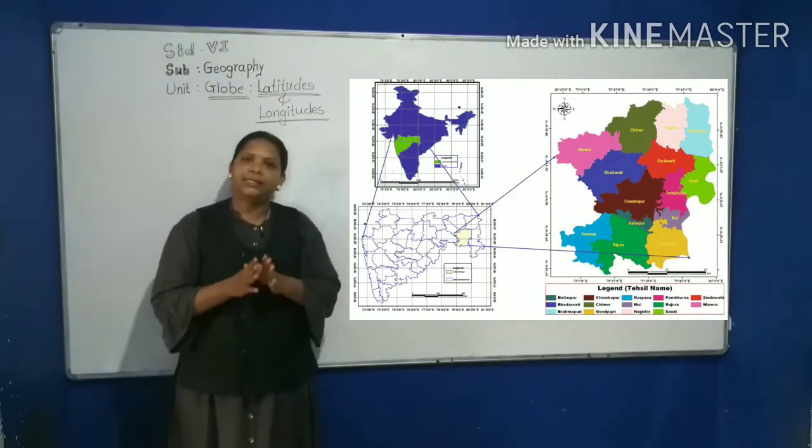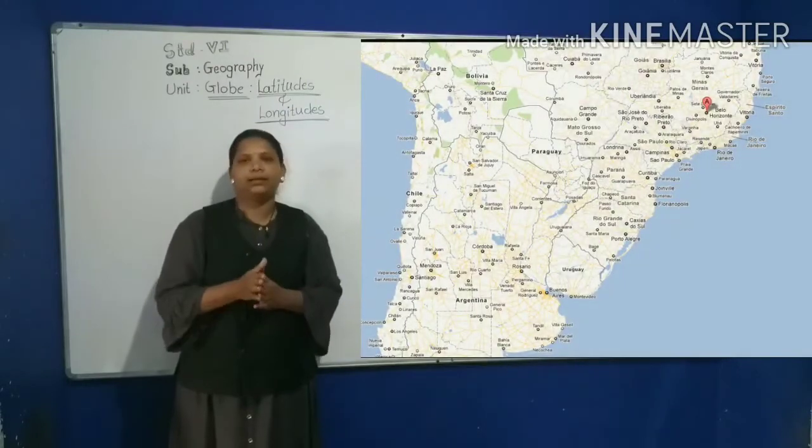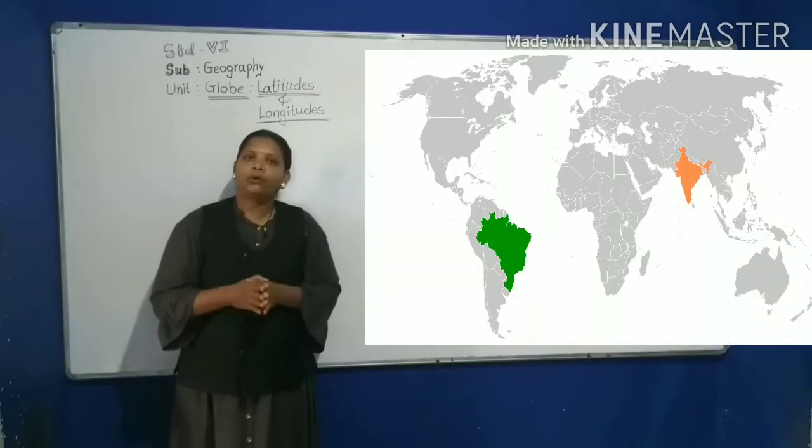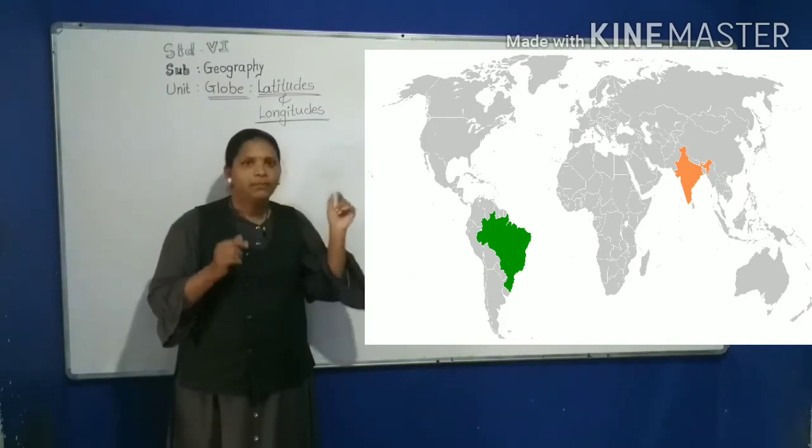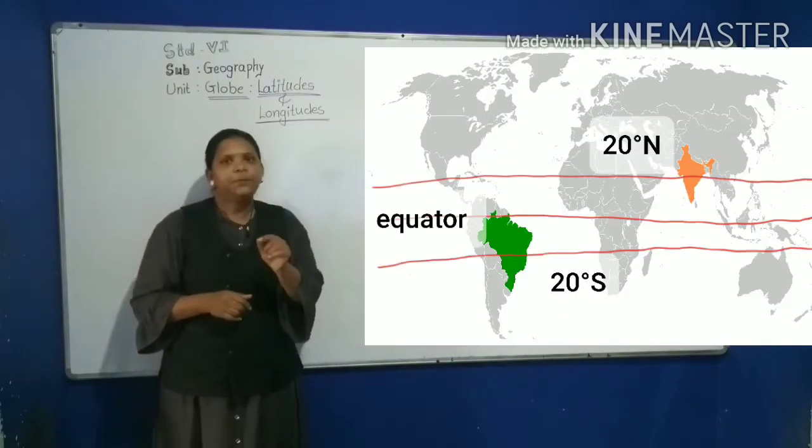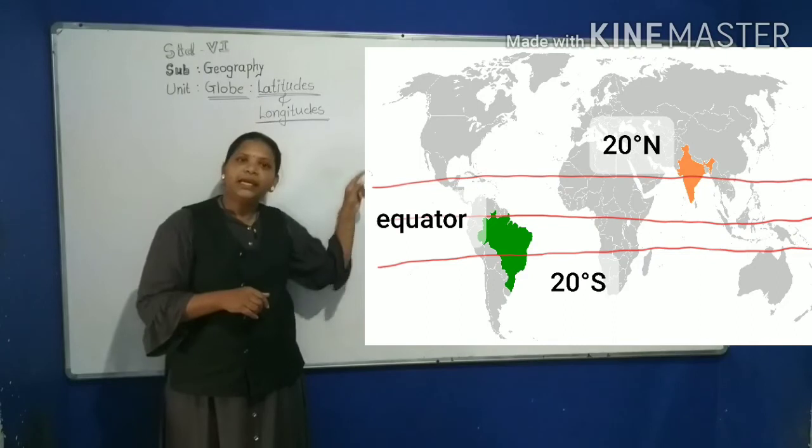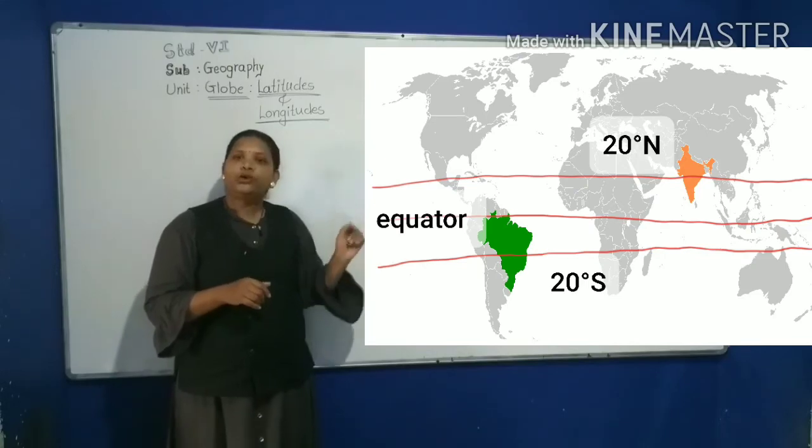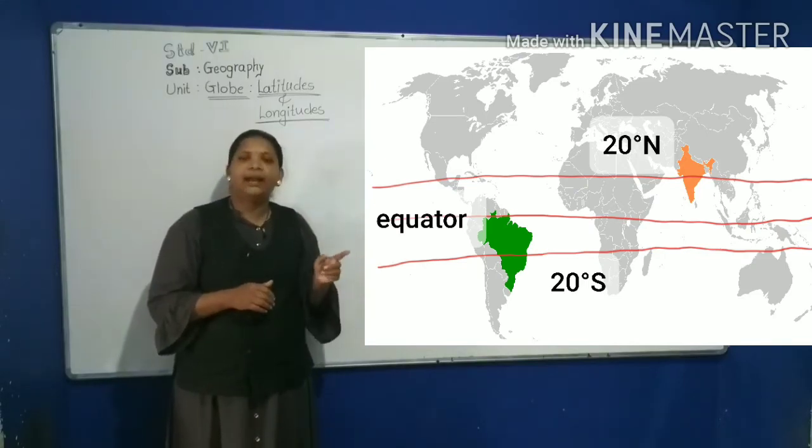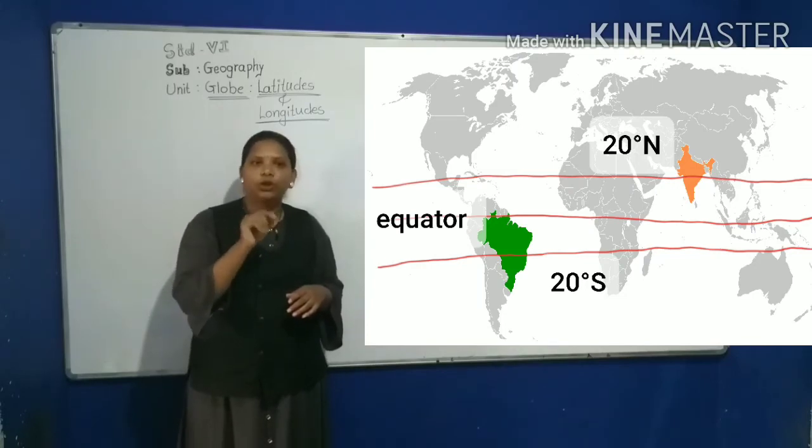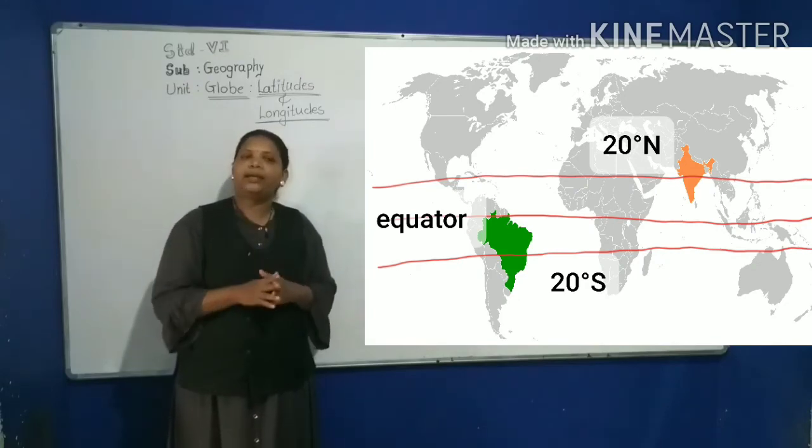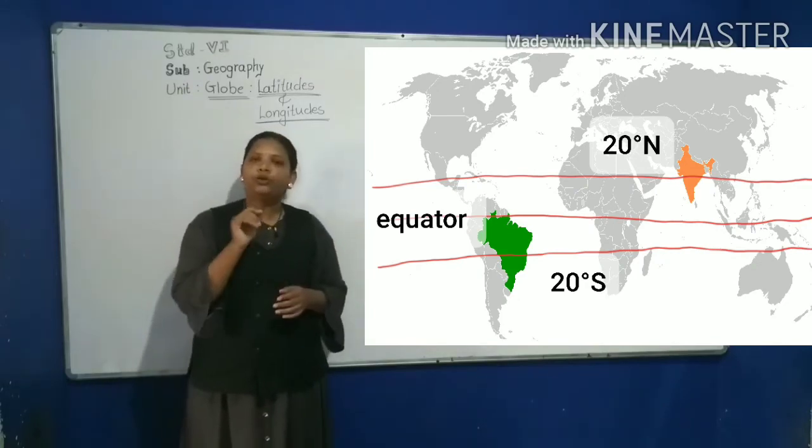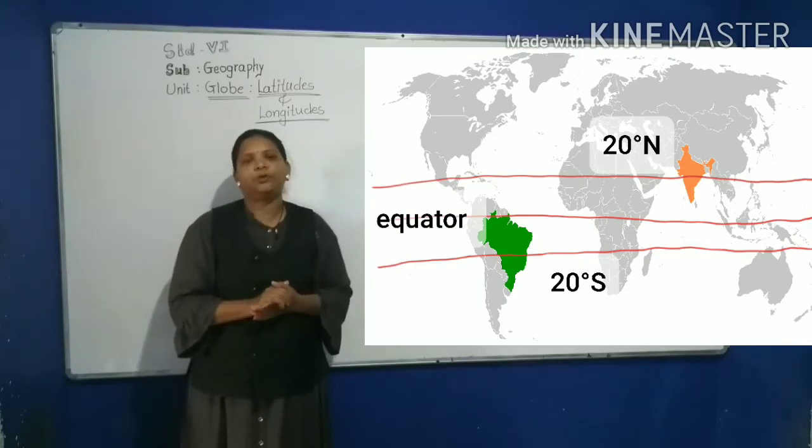Chandrapur in Maharashtra in India and Belo Horizonte in Brazil, South America, are located on the parallels of about 20 degree latitude. But Chandrapur is 20 degree north of the equator, whereas Belo Horizonte is 20 degree south of the equator. We can say that Chandrapur is situated at 20 degree N latitude and Belo Horizonte is situated at 20 degree S latitude.